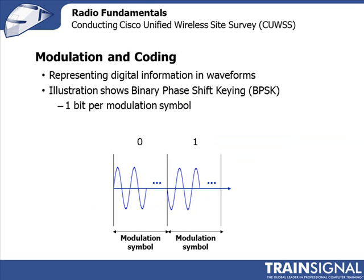Now let's talk about modulation. What goes over the air is waveforms — sine waves. We need to take your ones and zeros and represent them as waveforms, and there are different ways of doing this: pulse modulation, amplitude modulation, frequency modulation, and phase modulation. In Wi-Fi, we use phase modulation, which is also used in cellular networks because it's a bit more robust than some of the other techniques.